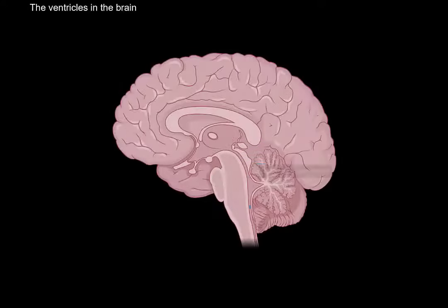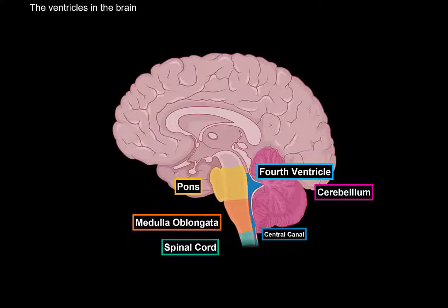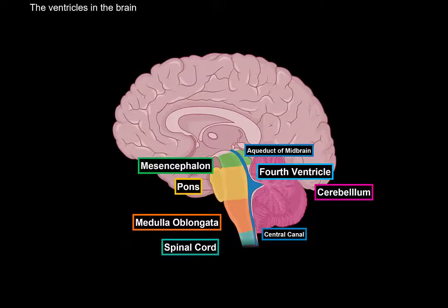The fourth ventricle lies between the pons, medulla and the cerebellum. Inferiorly, the fourth ventricle continues as the central canal within the spinal cord. Superiorly, the fourth ventricle continues upwards as the aqueduct of the midbrain, which is inside the mesencephalon.